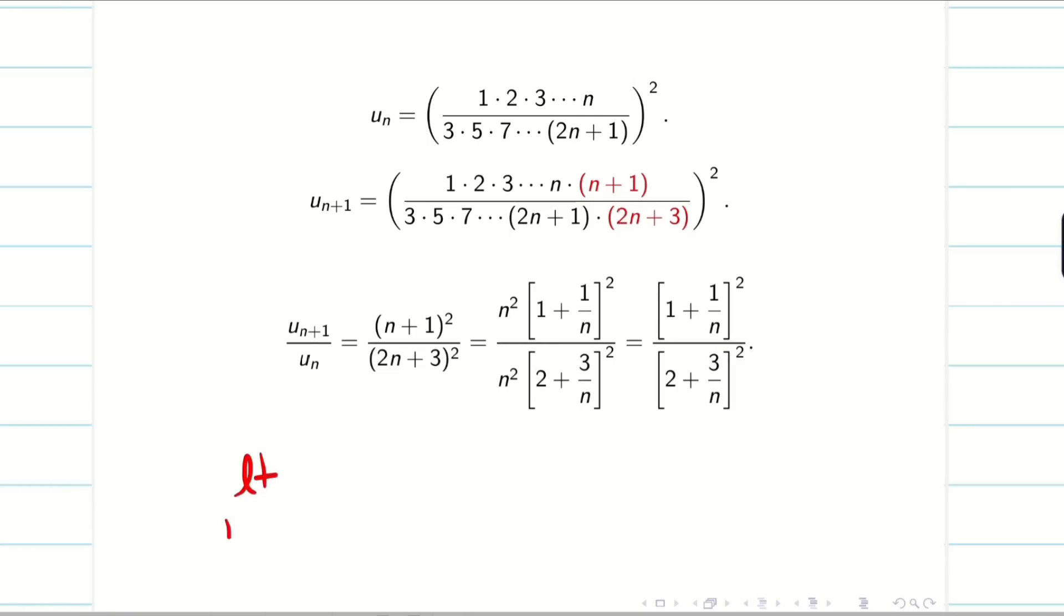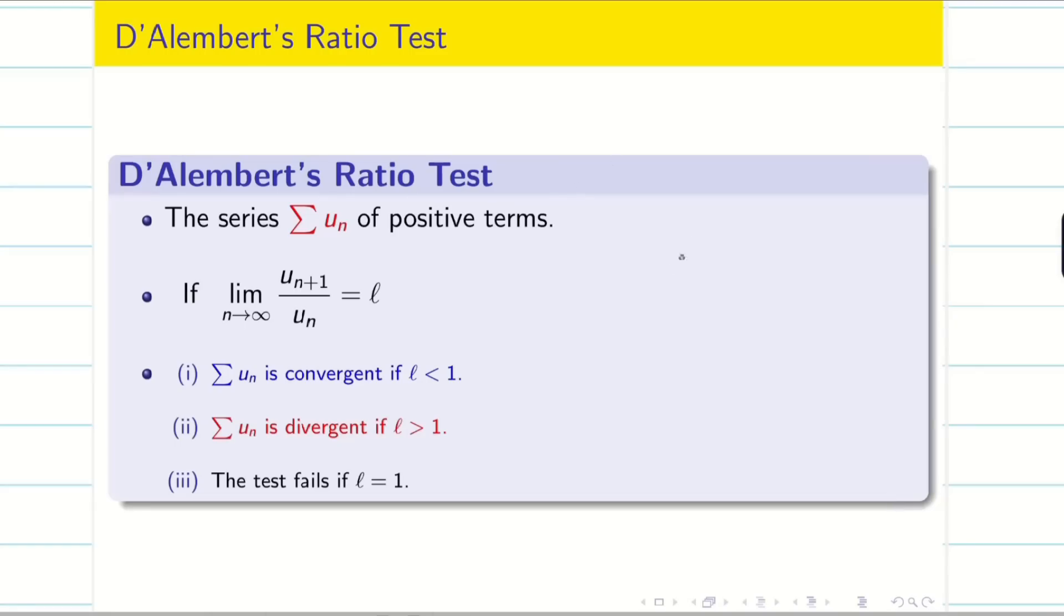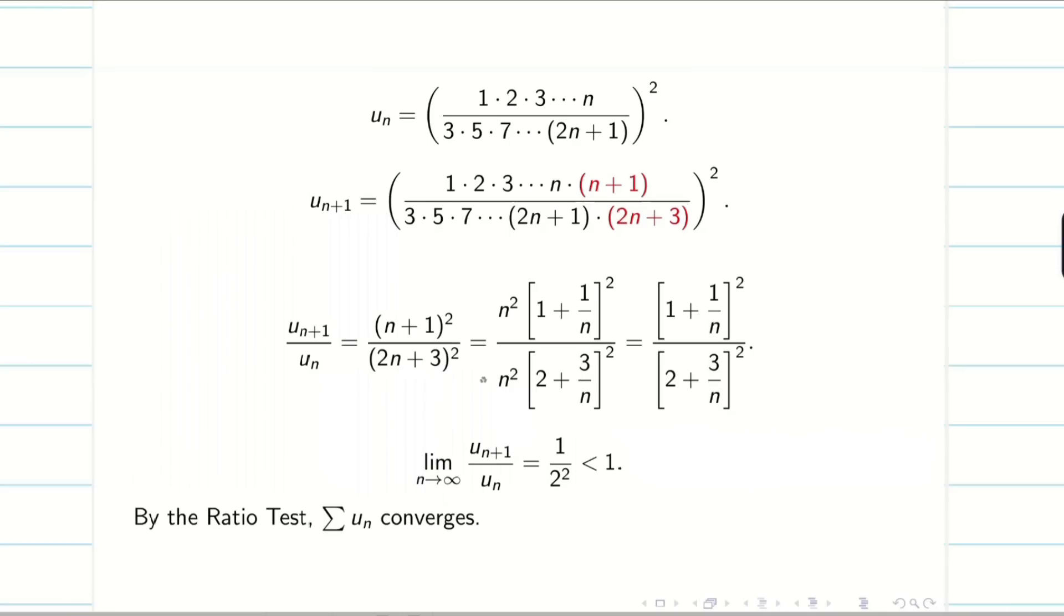Now if we apply the limit n tends to infinity, un plus 1 by un will be getting (1 plus 0)² divided by (2 plus 0)² because 1 by infinity is 0. So 1 by 4. Very good. It is less than 1. By ratio test, if L less than 1, summation un converges. By ratio test, we say the given series is a convergent series.